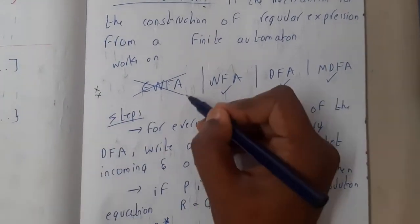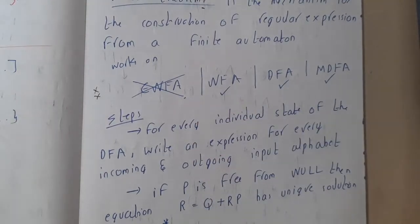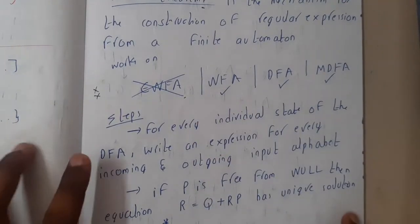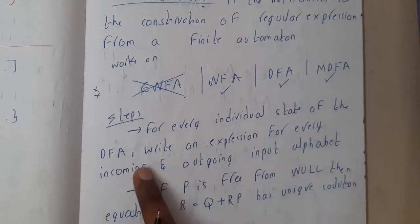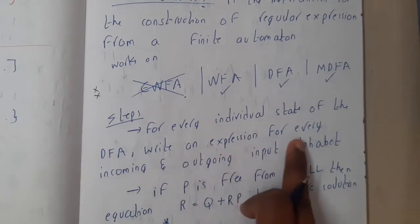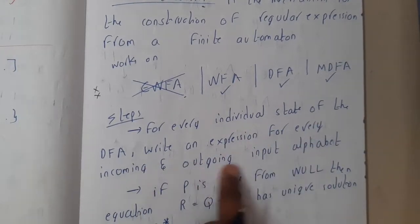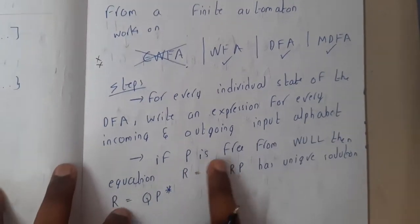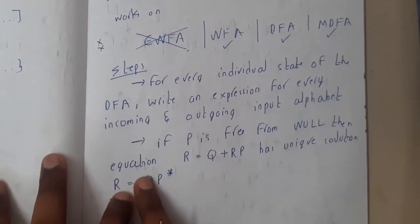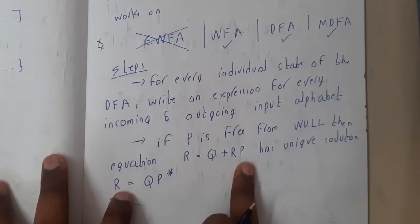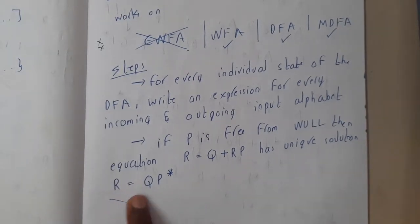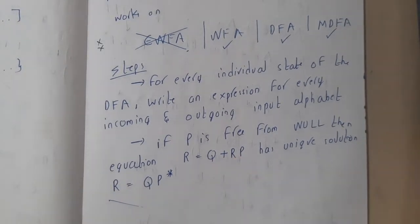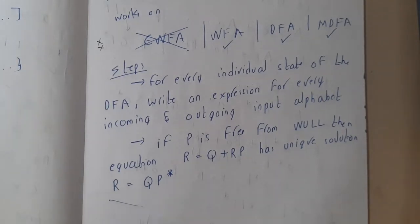There are only two simple steps. The first step is: for every individual state of the DFA, write an expression for every incoming and outgoing alphabet. The second step: if P is free from null, then the equation R = Q + PR has a unique solution R = QP*.